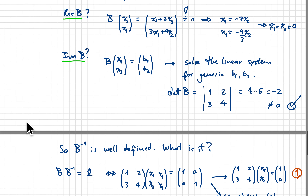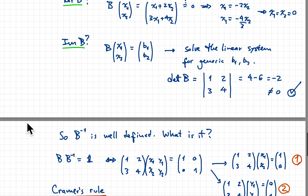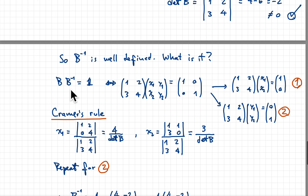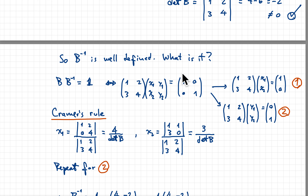We know the inverse of B is well-defined. To find it, we use the condition that B times B-inverse equals the identity matrix. We set up this equation with B = [[1,2],[3,4]] and a generic B-inverse with unknowns x1, y1, x2, y2. The right-hand side is the 2×2 identity matrix. This gives two systems of two equations each — system 1 for the first column and system 2 for the second column.